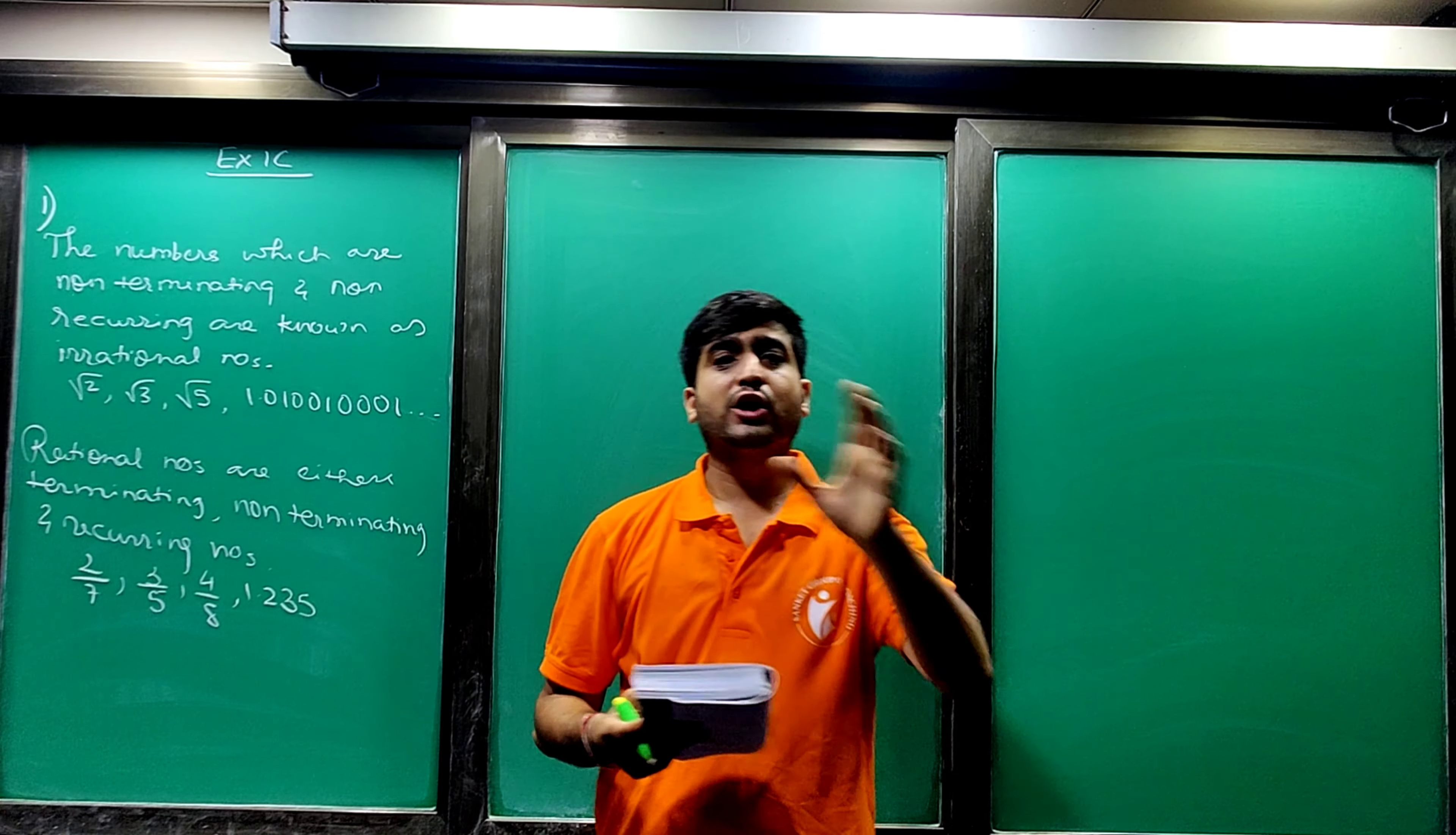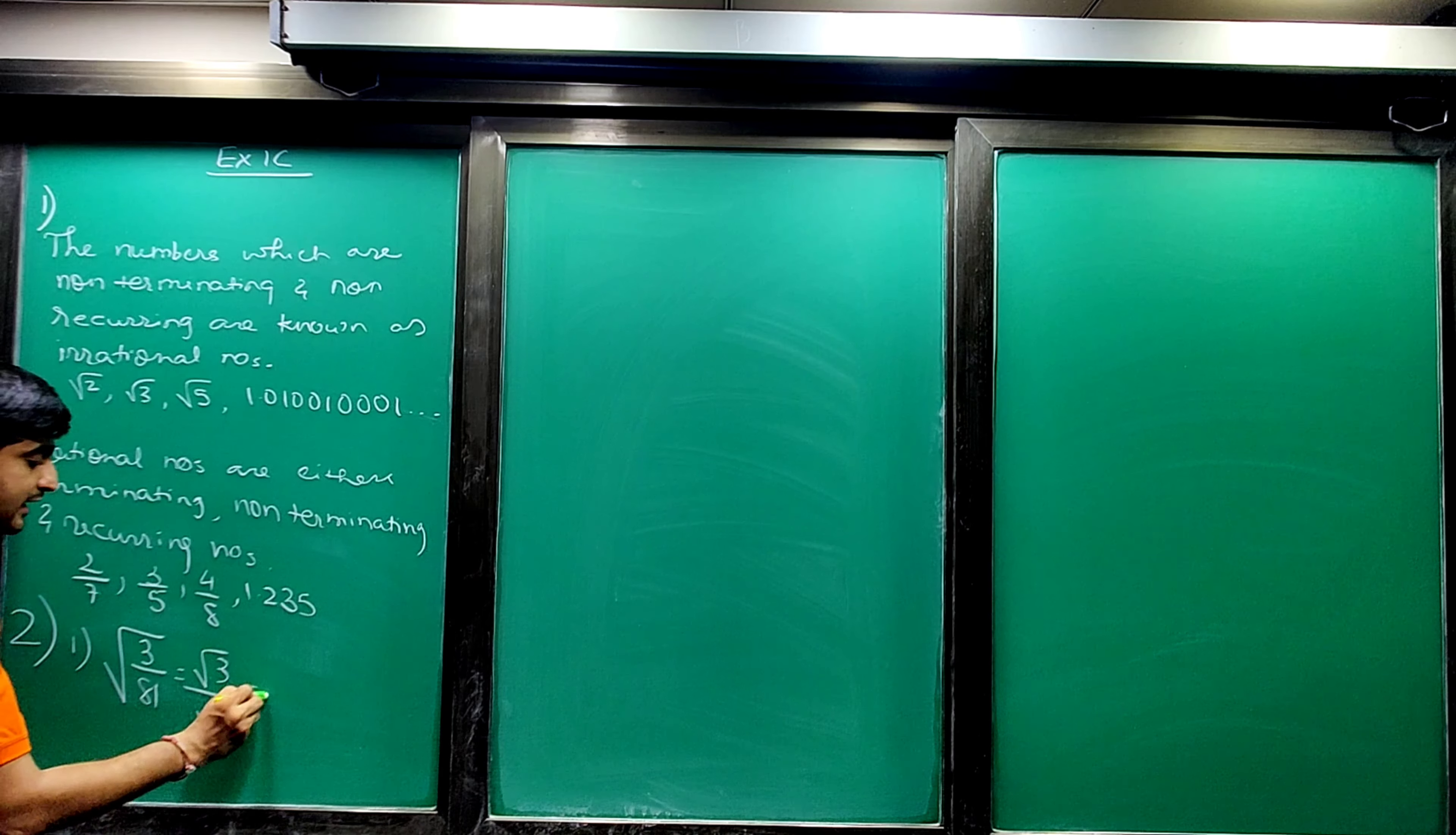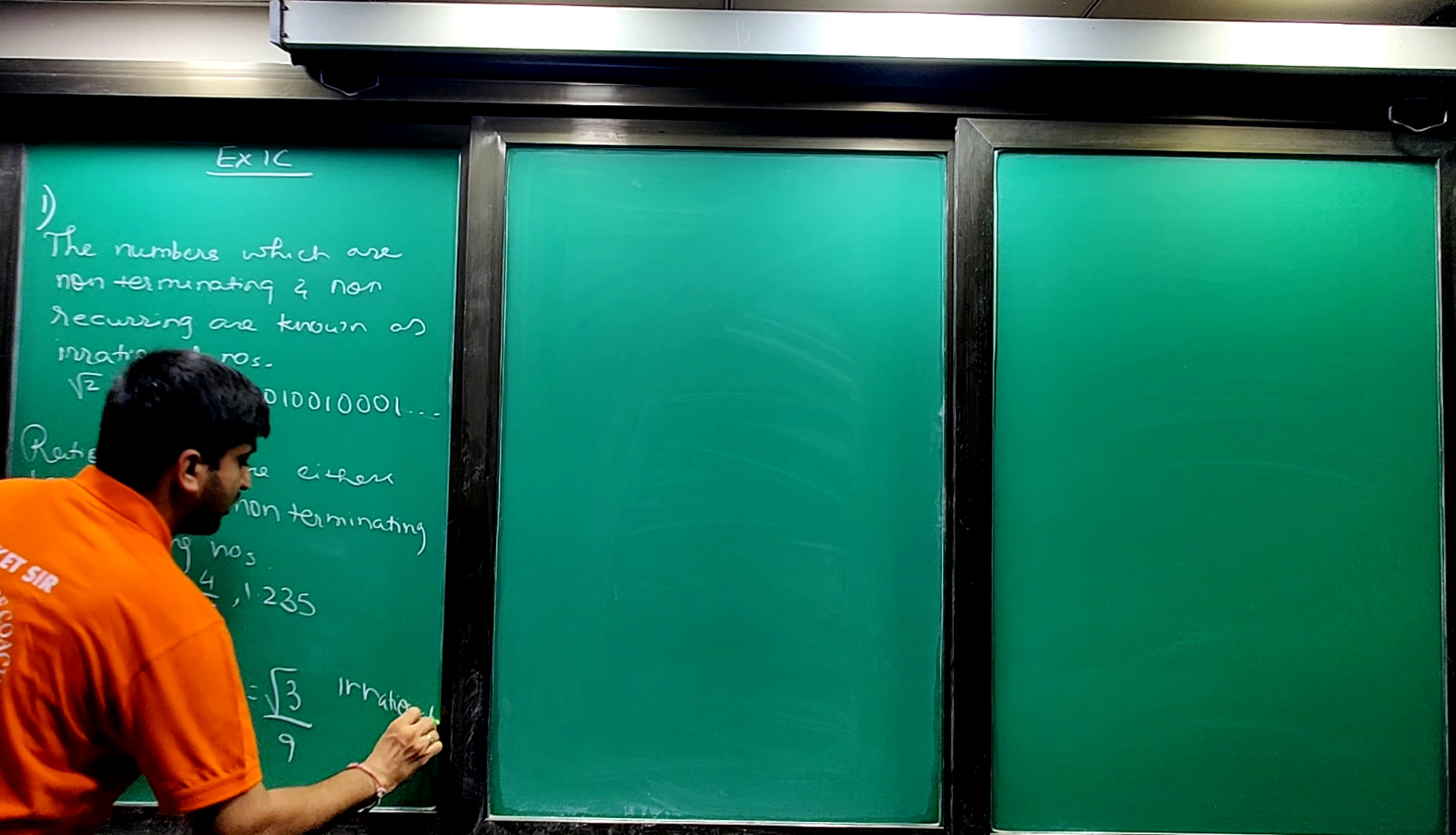So this was your major sum. Now second: classify the following numbers as rational or irrational, give reasons to support your answer. Second ka pehla dekho: root 3 upon 81. Root 3 upon 81 can be written as root 3 upon root 81. Root 3 is irrational number and 81 is 9. But division of any two numbers, one if it is irrational and one if it is rational, then your answer is always irrational number.